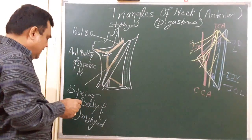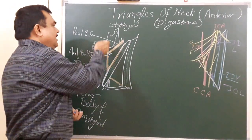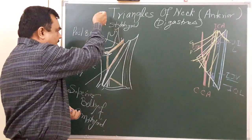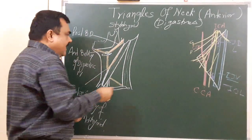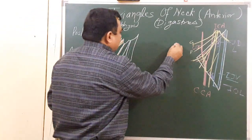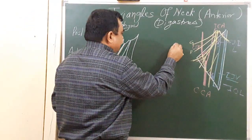Now the floor of this triangle — to understand the floor and contents, we look at a cross-section. In this position of the cross-section you can see the relevant structures.